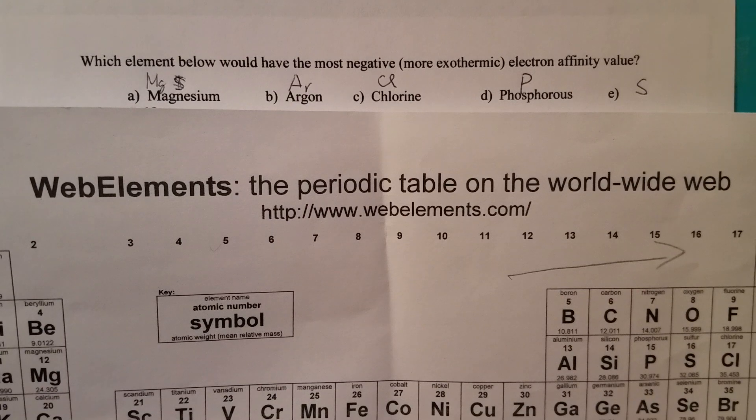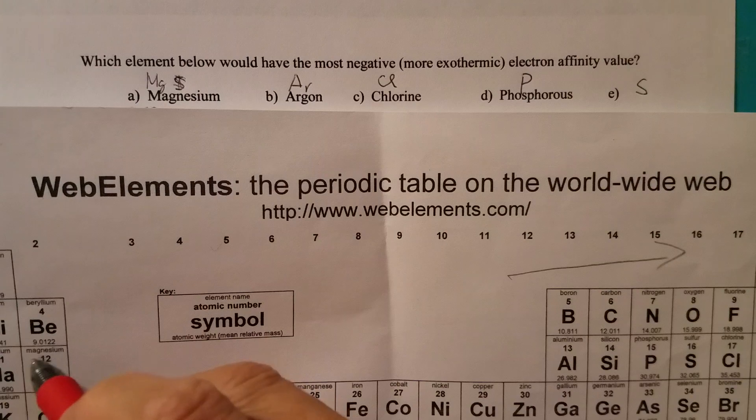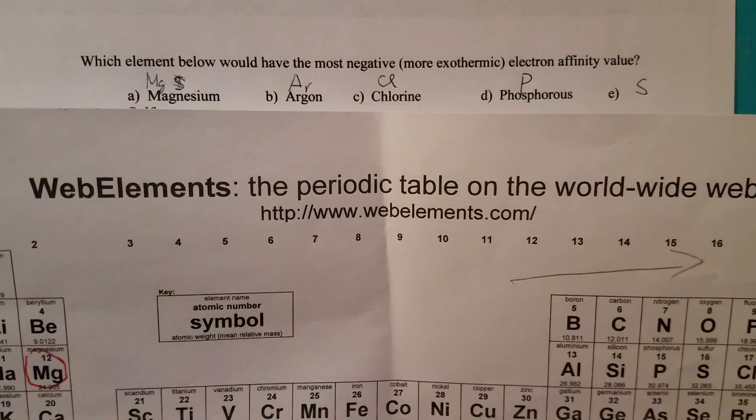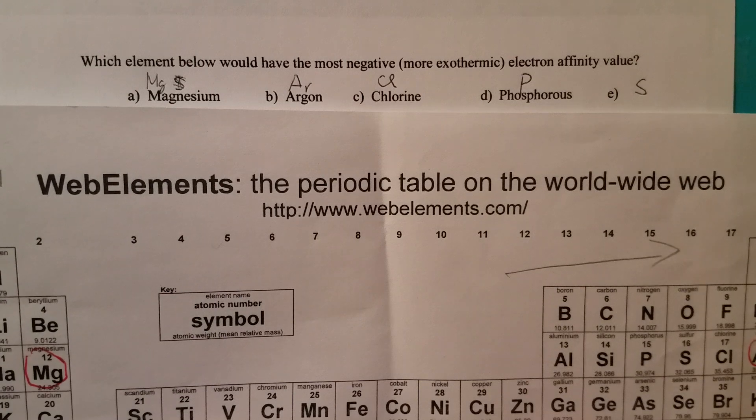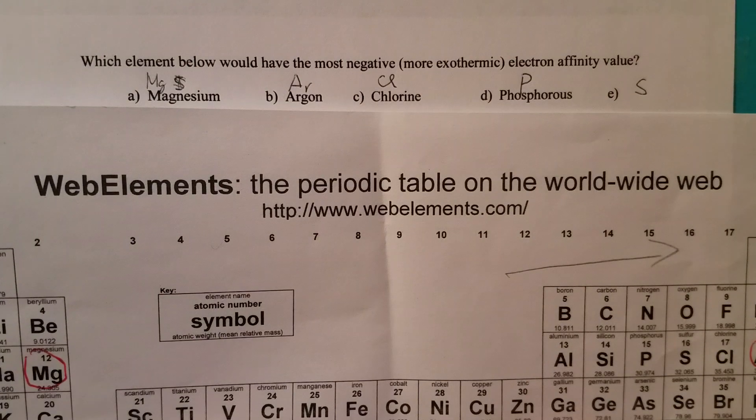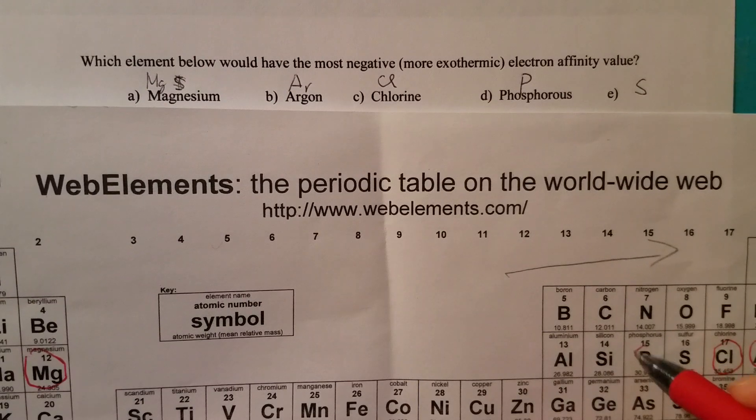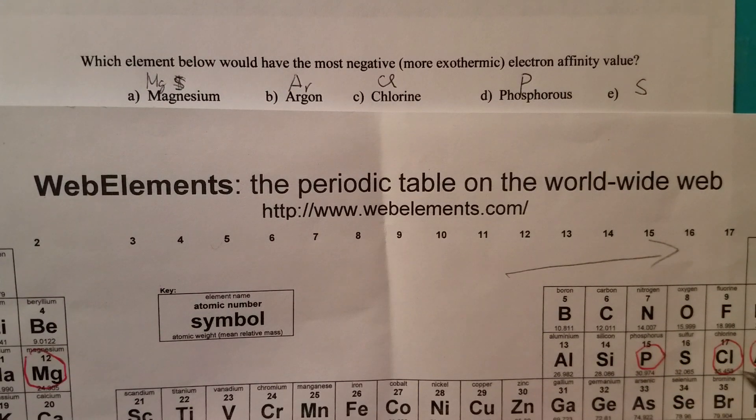Now let's find out those elements in the periodic table. Magnesium, argon, chlorine, phosphorus, sulfur.